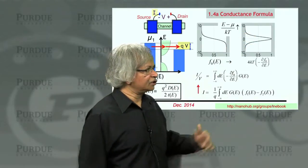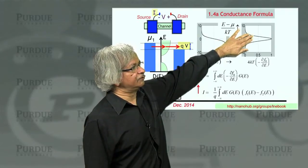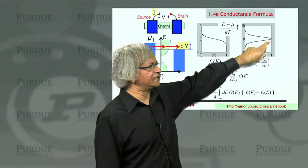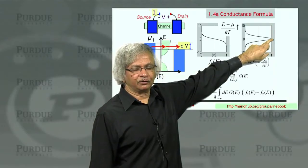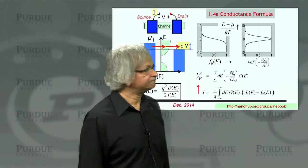In fact, what we'll show later is that the area under this curve is actually 1. So roughly speaking, you can think of it as if the peak is 1 over 4kT, the width is 4kT, and so the area is about 1.